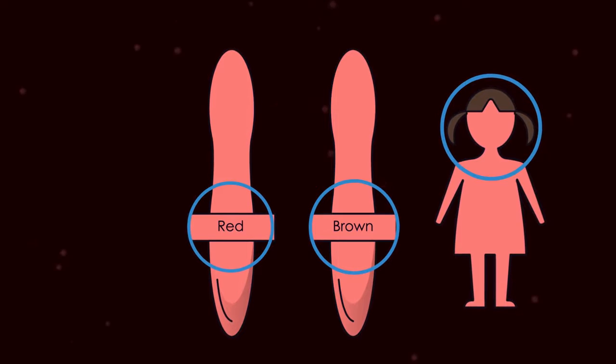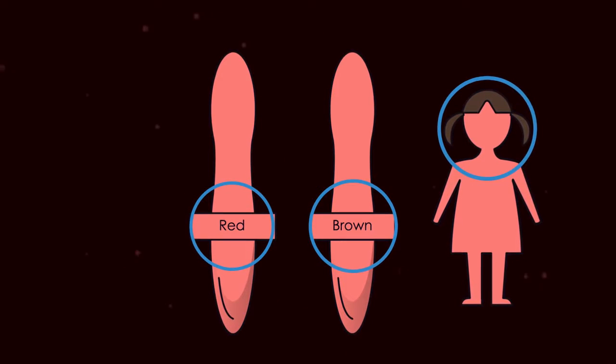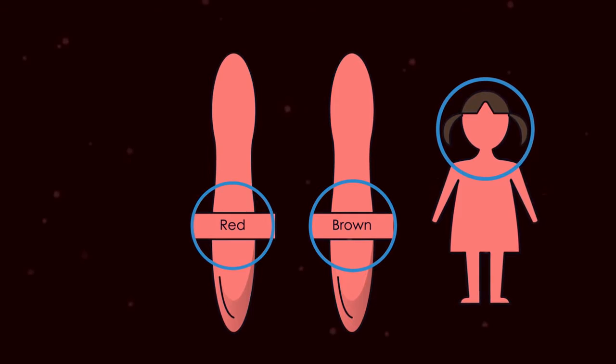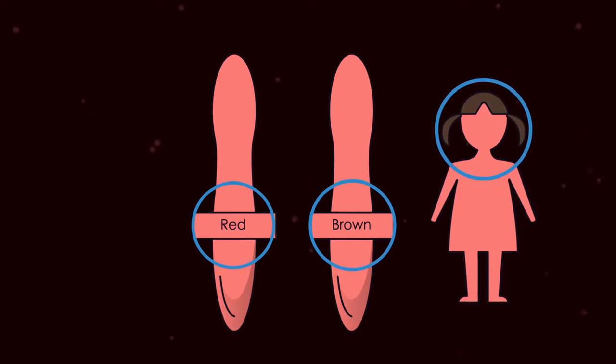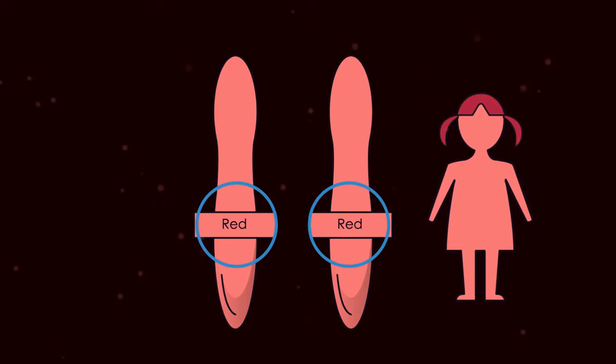So in this example, the red hair allele is recessive. This means the gene is not expressed in the phenotype. Recessive genes are only expressed when the other gene is also the recessive form, so it needs to be homozygous, both carrying the red hair allele.